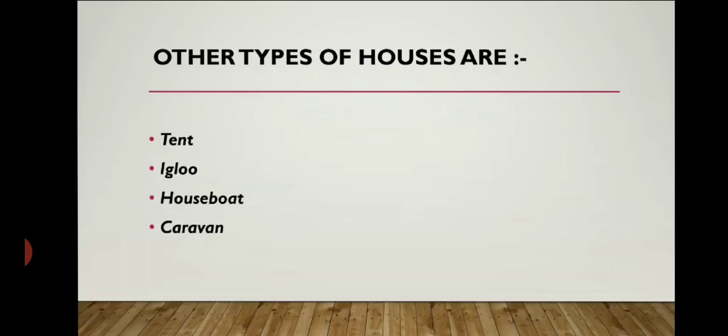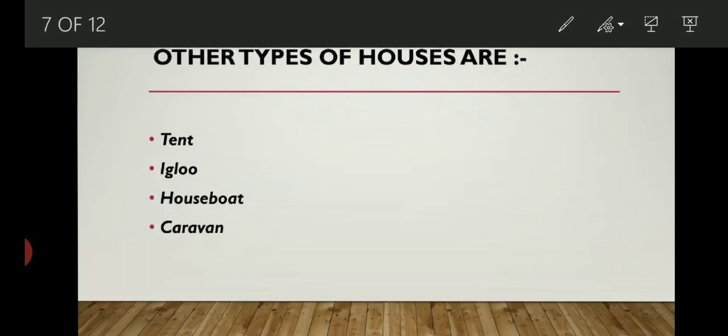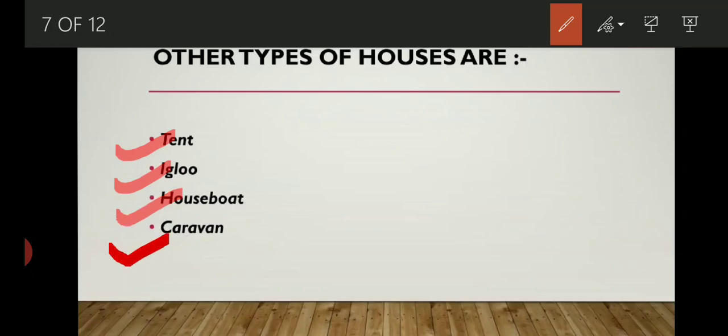Other types of houses. There are many other kinds of house in the world. Some of them are: tent, igloo, houseboat, and caravan.